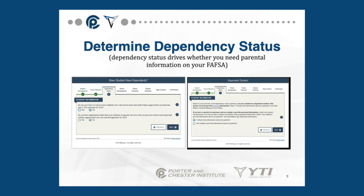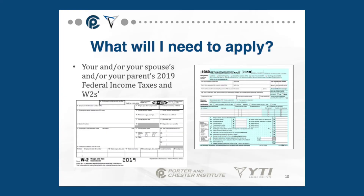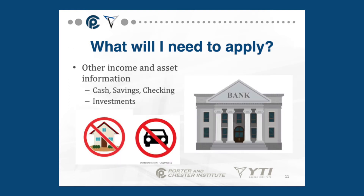This is the screen on the FAFSA where you are asked these questions. Next, you need to gather together the things that you will need in order to fill out the FAFSA. You will need your and your spouse's — if you are married — 2019 federal income taxes and W-2s. If it is determined that you are a dependent student for purposes of financial aid, you will also need your parents' 2019 federal income taxes and W-2s. In addition, you will also need any other income and asset information pertaining to the people on your FAFSA. This includes the value of cash, savings and checking accounts, as well as investments.